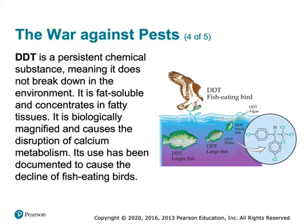Persistent pesticides can bioaccumulate — mercury toxicity is an example. Higher up the food chain: insects would get a little bit of DDT, then smaller birds would eat those insects, then a bird of prey would eat that bird, and the bird of prey ends up getting a higher concentration of that toxin. Similarly, predatory fish have higher levels of mercury, which can affect us humans.